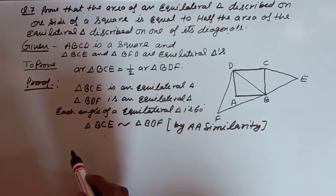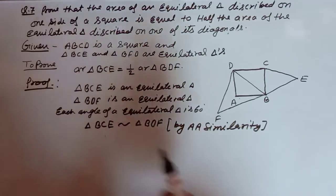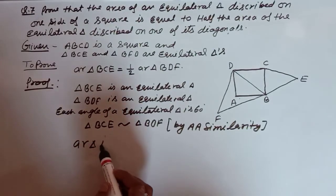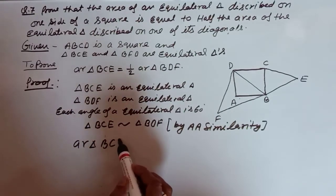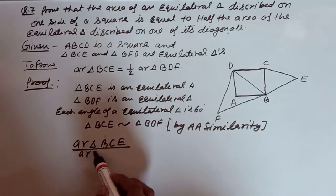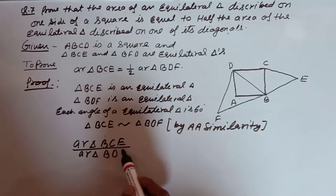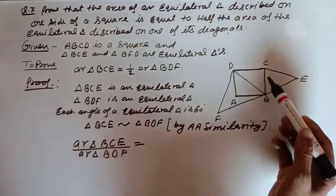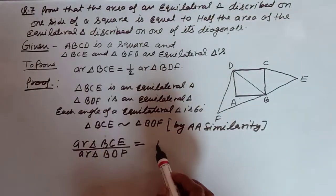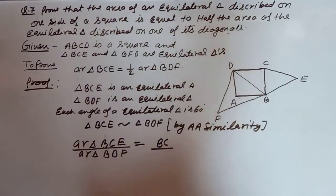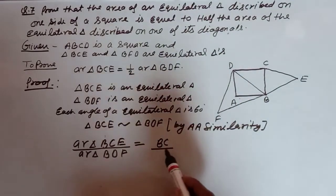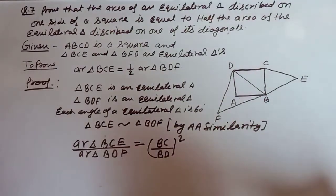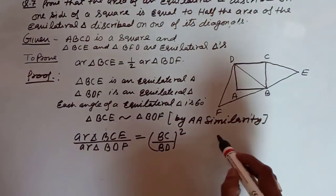Since both triangles are similar, the ratio of their areas equals the square of the ratio of their corresponding sides. So: area of △BCE / area of △BDF = (BC/BD)².